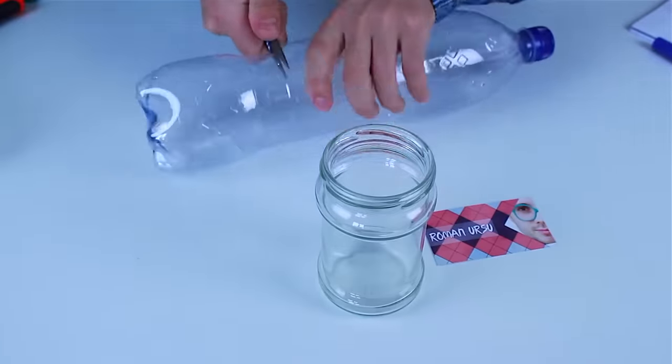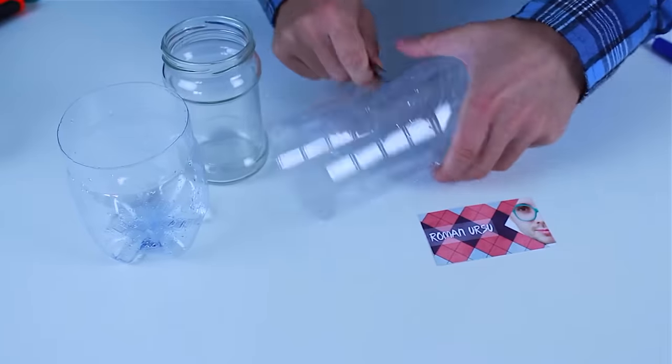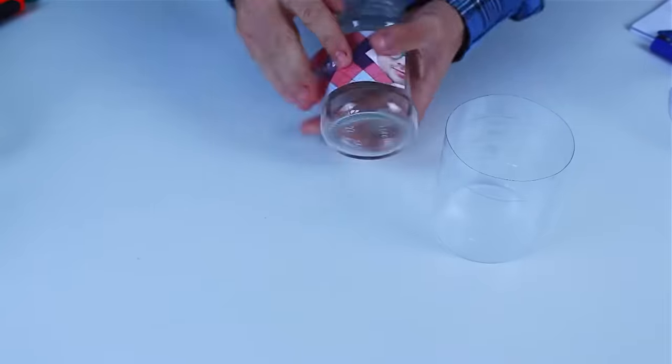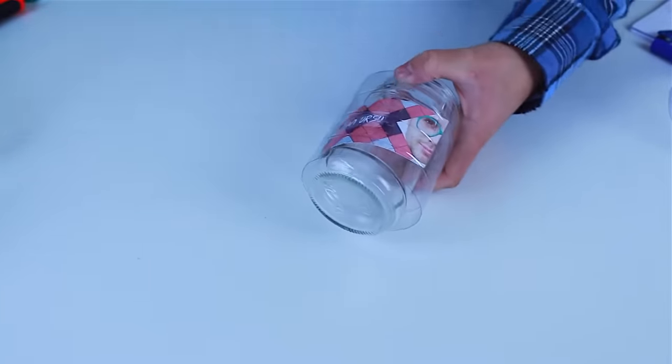In conclusion, let's see how to laminate a glass jar with the help of a plastic bottle. Cut the top and the bottom off. Put the middle part onto the jar.